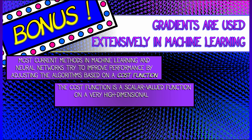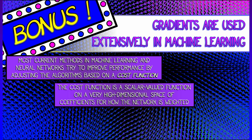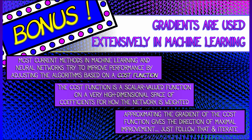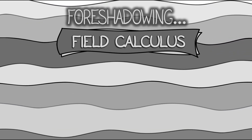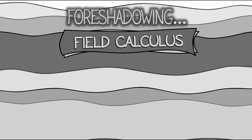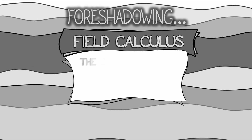This cost function is a scalar-valued function on a very high-dimensional space of coefficients for how the network is weighted. And if you can approximate the gradient of this cost function, it gives the direction of maximal improvement of the algorithm. So you just follow that direction, iterate, keep going — if you can compute the gradients. And that's not so easy, as you'll find out in the future when you learn more about calculus associated to fields.